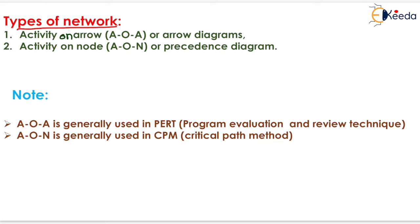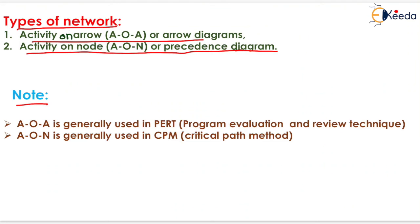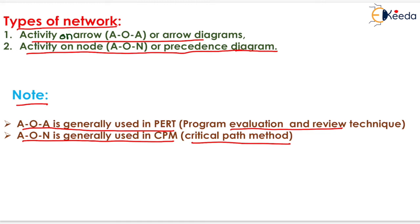The types of network are: Activity on Arrow (AOA), also called arrow diagram, and Activity on Node (AON), also called precedence diagram. AOA is generally used in PERT, that is Program Evaluation and Review Technique, and AON is generally used in CPM, that is Critical Path Method. That is all about network analysis.